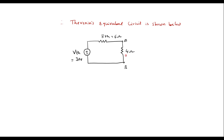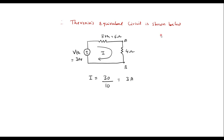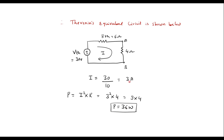Now we have to calculate the power dissipated in the 4 ohm resistor. Let me assume current through this loop is I. I equals 30 divided by the series combination of 6 and 4 ohm, that is 10, which equals 3 amp. Power dissipated in the 4 ohm resistor is P equals I squared times R, that is 3 squared times 4, which equals 9 times 4. Therefore P equals 36 watts. This is the power dissipation in the 4 ohm resistor. Thank you for watching.